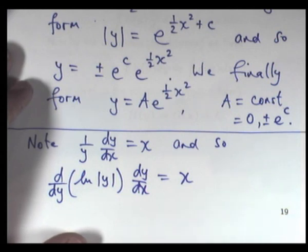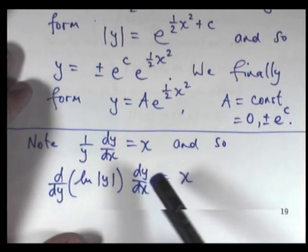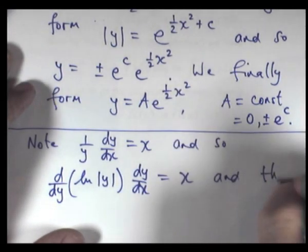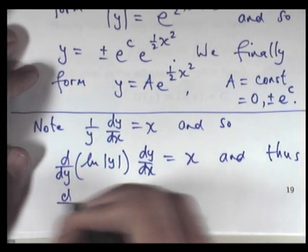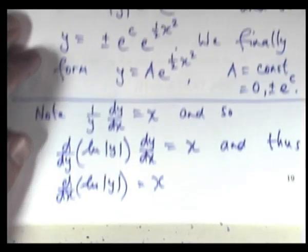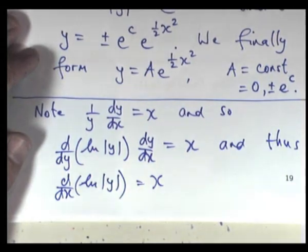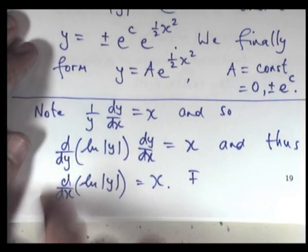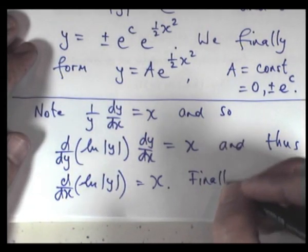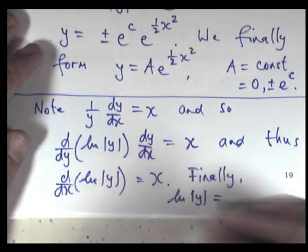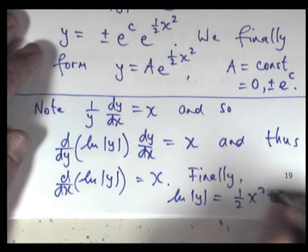Now, what I can do is cancel off these dy's and I get dx here. d/dx of log y equals x. Okay, so, you can actually go to this step using the chain rule if you can see it. So, all we need to do is to integrate both sides of this equation.